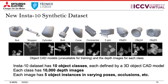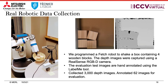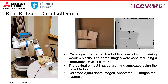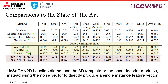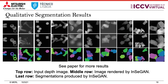To empirically evaluate INSEGAN, we created a novel synthetic dataset using a physics engine, which we call INSTA10. It consists of nearly 100,000 depth images, and each image has five instances of one of 10 CAD models. We also created a real-world dataset using a fetch robot by shaking a bin with blocks. We compare INSEGAN against state-of-the-art approaches on these synthetic and real-world datasets, and our experiments show that INSEGAN is about 6% better than its closest deep learning counterpart. These are the results on the real-world data instance segmentation along with a few qualitative results.